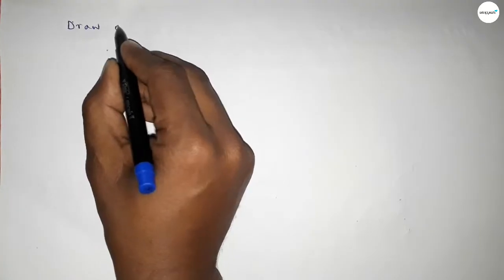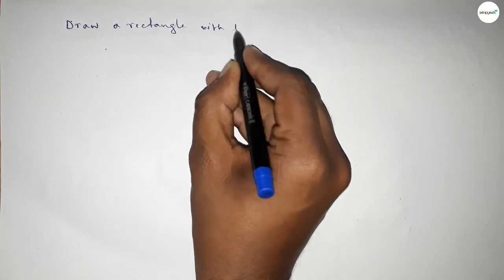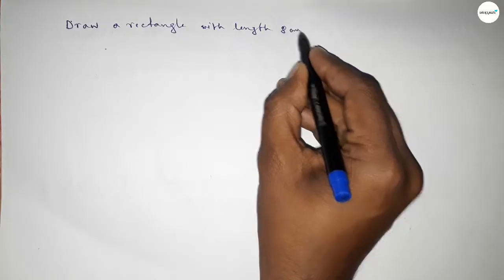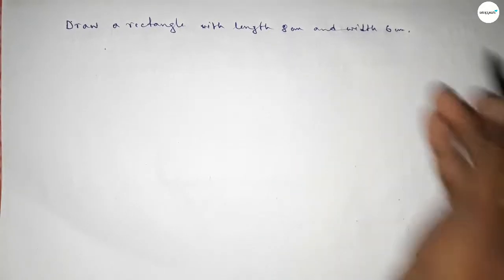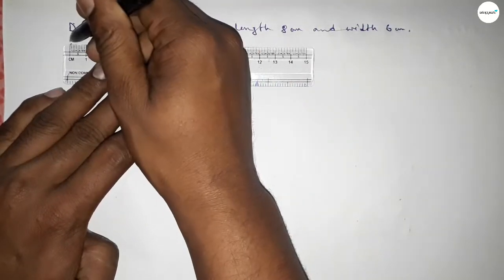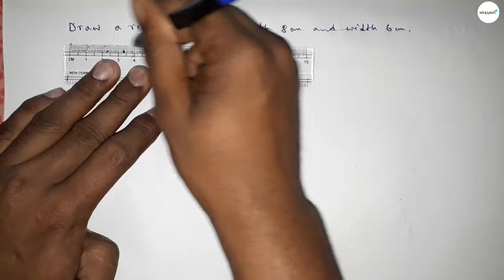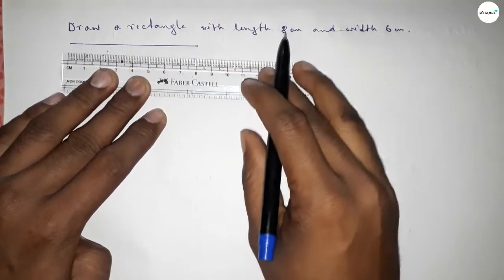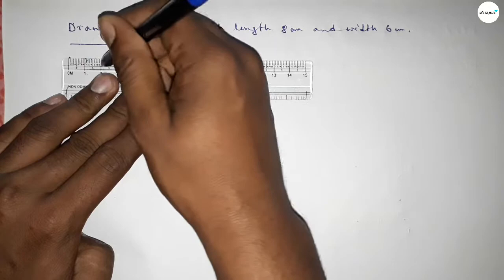Hi everyone, welcome to SI Share Classes. Today in this video we have to draw a rectangle with length 8 centimeters and breadth or width 6 centimeters. So let's start the video. First of all, we have to draw the length 8 centimeters, and next we draw the width or breadth 6 centimeters.